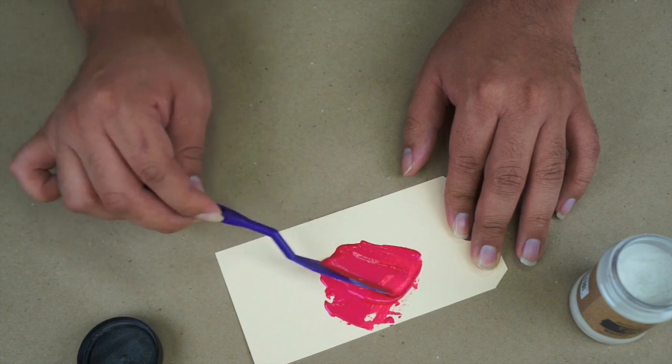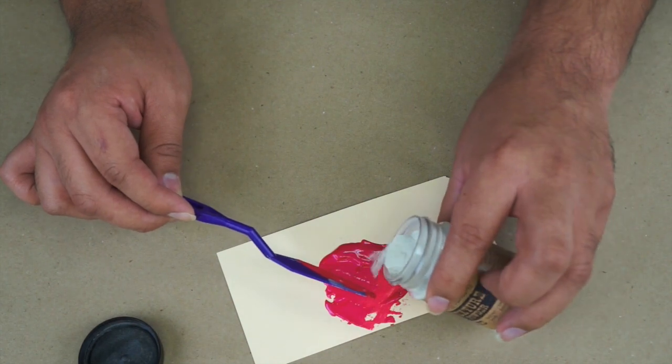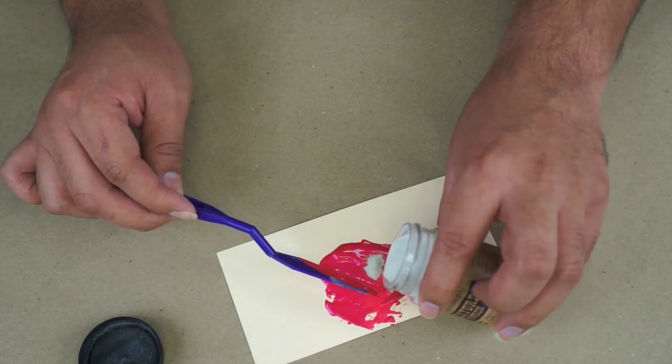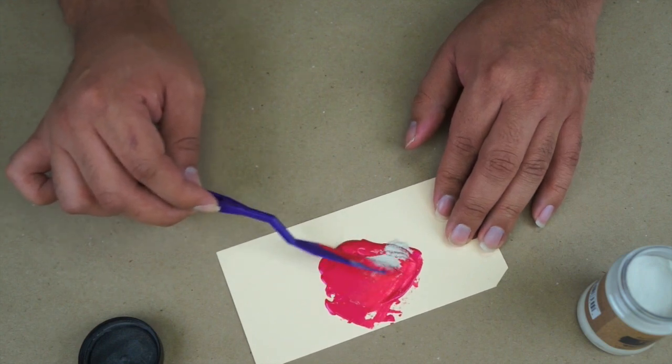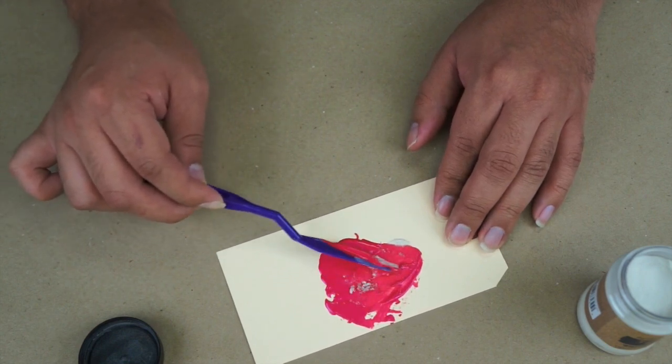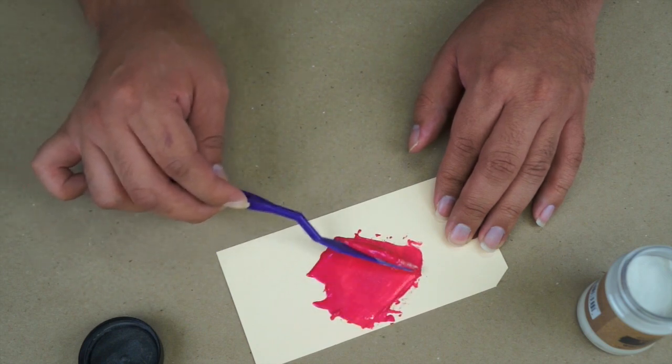Now if you want a little bit more texture, you can always add a little more. So I'm just going to add a little bit more. And you can see that it really blends very well with the paint.